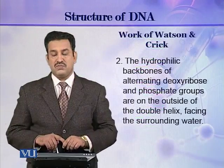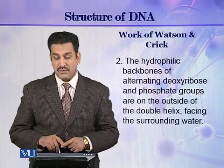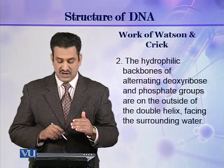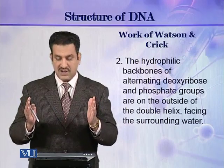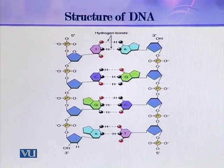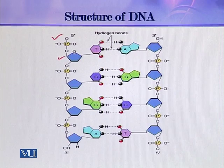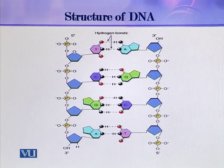The second important point described by Watson and Crick was that the hydrophobic backbones of the alternating deoxyribose and phosphate groups are on the outside of the double helix, facing the surrounding water. As you can see in this picture, the alternating phosphate and pentose groups lie on the outside of the double helix, while the bases stack inside the structure, inside the duplex.